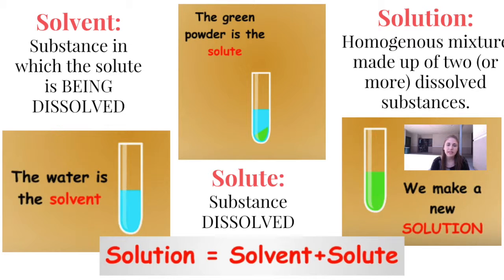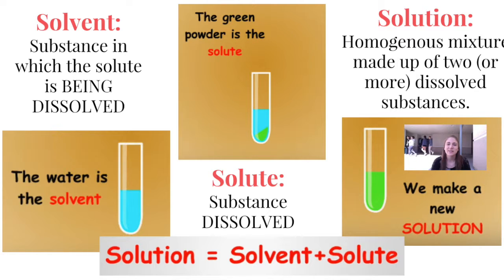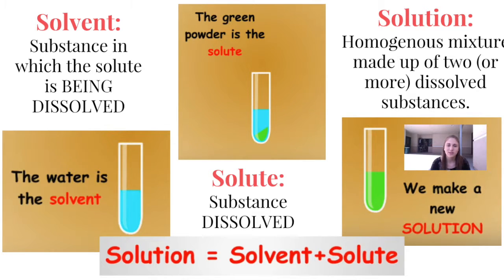A solvent is the substance in which the solute is being dissolved — most of the time it'll be water or some other liquid. A solute is the substance that is being dissolved; in this example it's green powder. And then finally, a solution is the end result — a homogeneous mixture made up of two or more dissolved substances.